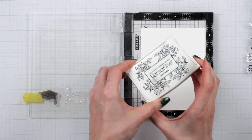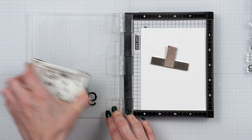First, of course, I stamped the cap image using onyx black ink onto white cardstock.